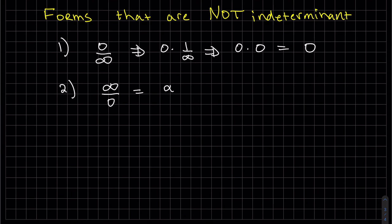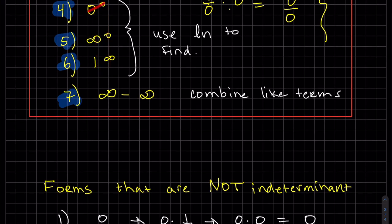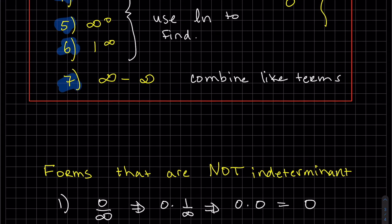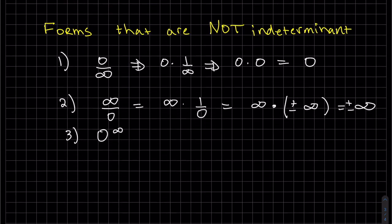And the other way around is similar. This is infinity times 1 over 0, infinity times 1 over 0. It could be plus infinity or minus infinity, which is infinity times infinity, which is infinity. Plus or minus infinity, really. Our third one is 0 to infinity. You know which ones are indeterminate and which ones aren't. 0 to the 0 is definitely indeterminate. Infinity to the 0 power is indeterminate. And 1 to infinity.